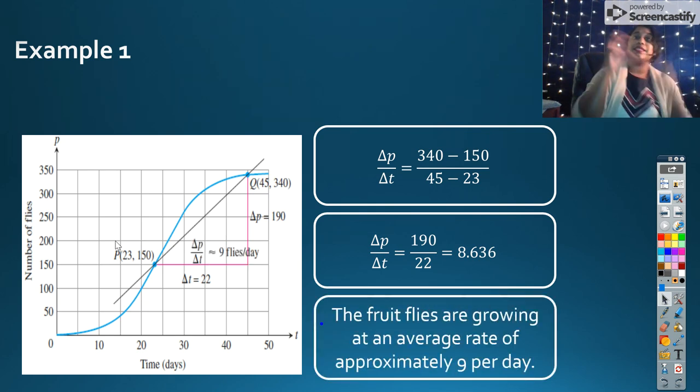So we say that it is approximately nine flies per day. But we don't forget our word approximately. And that's an average rate. That is not the instantaneous rate. That's that secant line example.